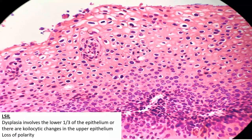In low-grade squamous intraepithelial lesion (LSIL), we can see some high nucleus-to-cytoplasmic ratio and some loss of polarization in the basal layer. Moving upward, cells acquire clear cytoplasm and weirdly shaped nuclei — this is what we call koilocytic change. This refers to a perinuclear halo with raisinoid nuclei and is most often associated with HPV infection.